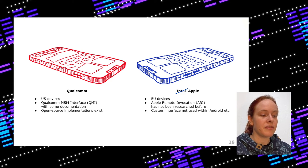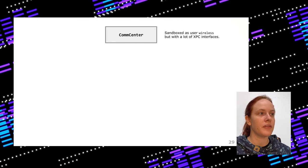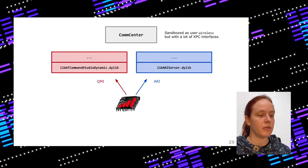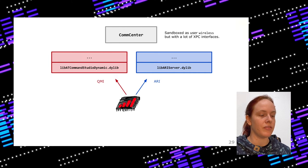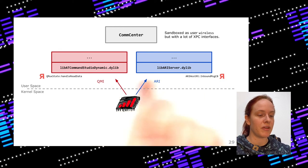The Intel chips use a special protocol called Apple Remote Invocation (ARI). If you search for this on the internet there are no Google hits at all — it really hasn't been researched publicly before. It's completely undocumented, a very custom interface, not even used for Android — it's an interface just for Apple. The component we are going to fuzz is Comcenter, which is the equivalent of the Bluetooth or Wi-Fi daemon but for telephony. It's sandboxed as the user 'wireless' but comes with a lot of XPC interfaces.